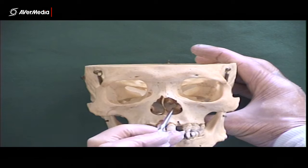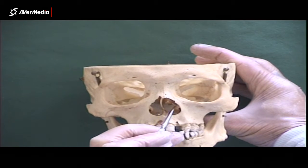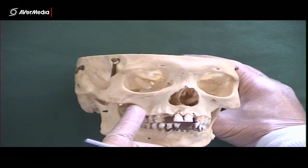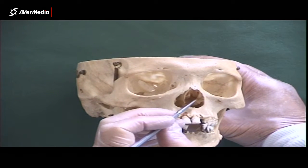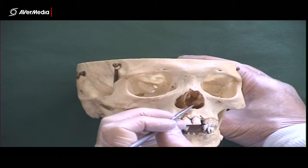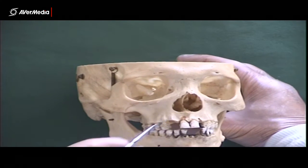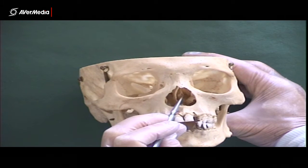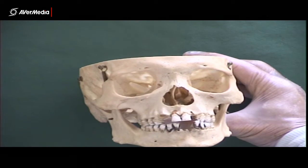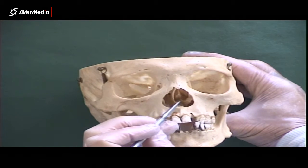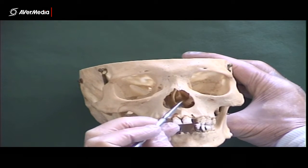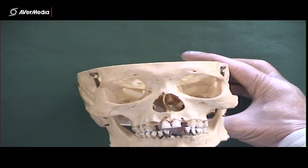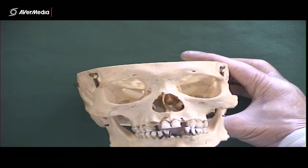We can also see on either side these structures, which are the inferior nasal conchae. The inferior nasal concha is a separate bone in its own right, whereas the one above it — the middle nasal concha — is part of the ethmoid bone. This is a beautiful specimen where we can see the inferior and middle nasal conchae clearly separate from each other. There is a superior one, but we can't really see it from this point of view.